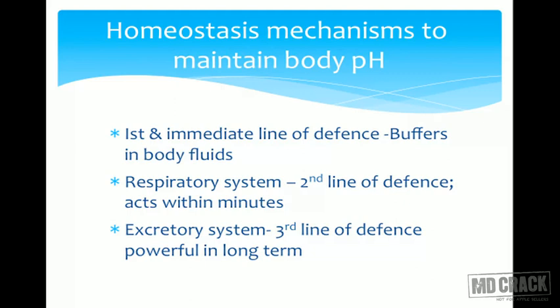Whenever acids are produced in the body, the body maintains pH through defense mechanisms. We can divide these into three lines of defense. The first line of defense — also the immediate line — is the buffers in the body, which act within fractions of seconds. A buffer is a combination of a weak acid and its salt.